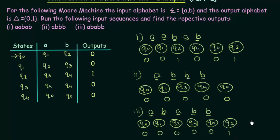This is how you get the outputs from the Moore Machine by giving certain inputs. You can also draw the transition diagram and check it, but this is how you solve it using the table itself. One thing we notice is that the output is always 1 bit longer than the input. Here the input was 5 bits and the output was 6, and for the 4-bit input the output was 5. This is because in a Moore Machine when we start from the starting state, there is always an output associated with it which is printed even before any input is given. I hope this was clear to you. Thank you for watching and see you in the next one.